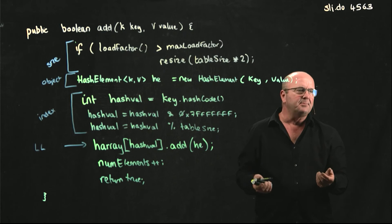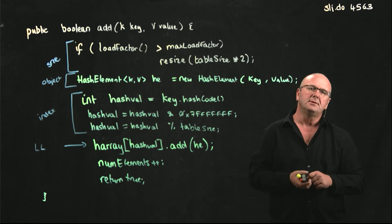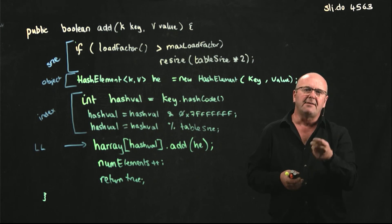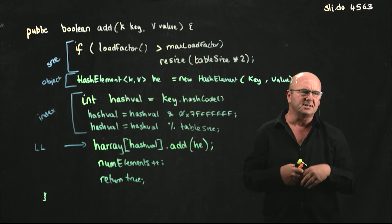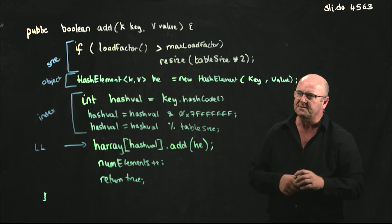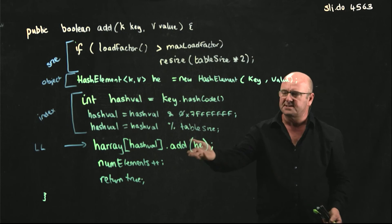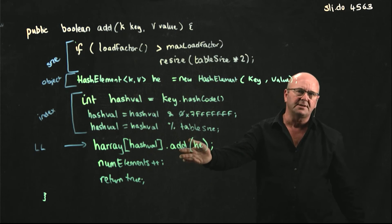We could have a tail pointer if we wanted to, but as you've already seen, having a tail pointer just means you've got additional work to do, because every time you do something like an add or a remove, you've got to check for the tail pointer.